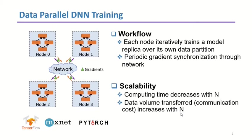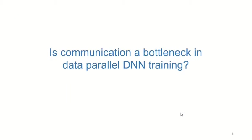Obviously, computing time decreases when adding more GPU nodes. However, communication overhead would increase and may eventually offset the power of increasing computing capacity. Is communication a real bottleneck in Data Parallel DNN training, given the existence of a high-bandwidth network?